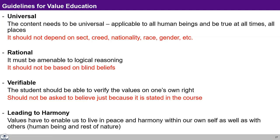The first guideline says the content needs to be universal — it needs to be applicable to all human beings and be true at all times, at all places. It has to be universal. It should not depend on sect, creed, nationality, race, gender, etc. It should not be limited to a certain particular sect, or caste, or creed, or nationality. But it has to be applicable to all human beings, at all times, in all places.